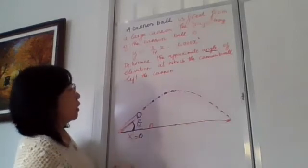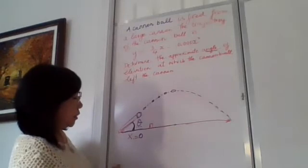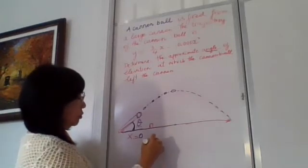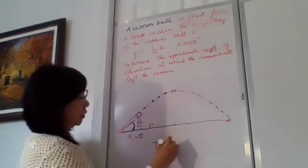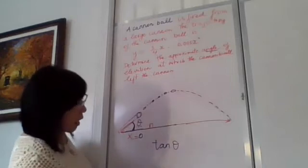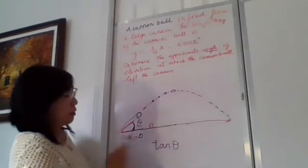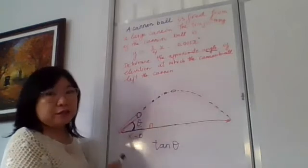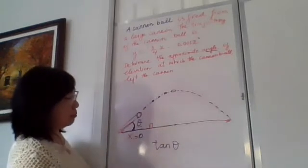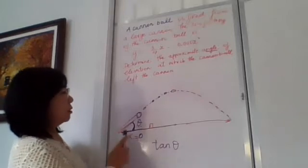Now usually to find the angle we relate it to something like tan theta, right? We have sine and cosine and tangent. Now in this question, I think that using the tan theta is the best, right? So how do we find the tan theta? Now the tangent, the slope of the tangent line, right?